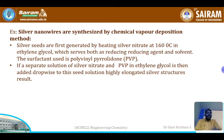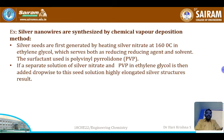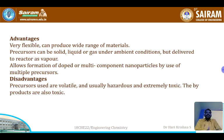Silver seeds are first generated by heating silver nitrate at 160°C in ethylene glycol, which serves both as a reducing agent and solvent. A separate solution of silver nitrate and PVP (polyvinylpyrrolidone) in ethylene glycol is then added drop-wise to seed the solution, resulting in highly elongated silver nanostructures — silver nanowires. The method is flexible and can produce a wide range of nanomaterials including gold and gallium arsenide nanoparticles.